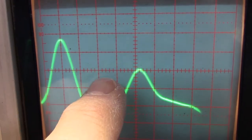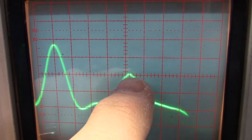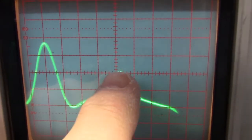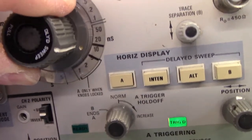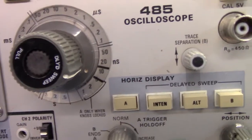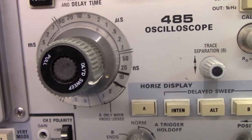So we got one, two, three, four, that's almost exactly 4.2 divisions. And if we look over here, we are at 10 nanoseconds per division. So now that we have that, we can do the math.